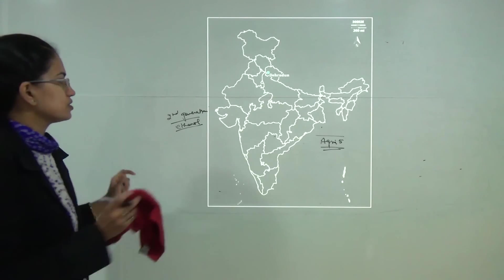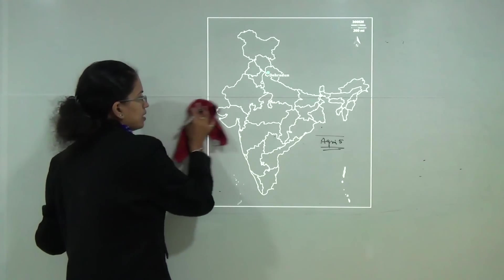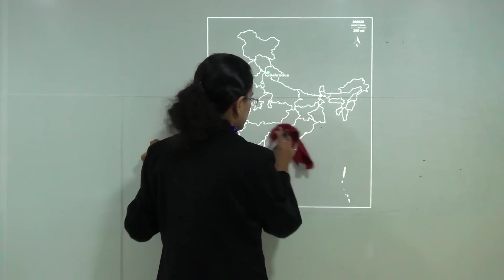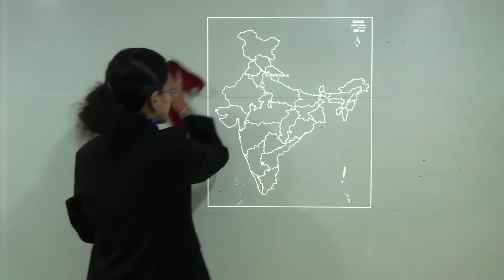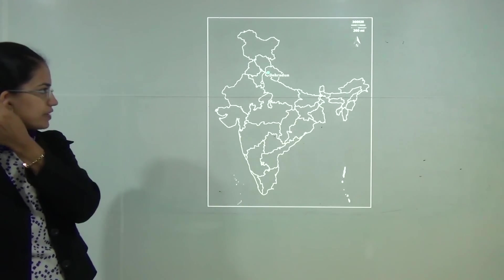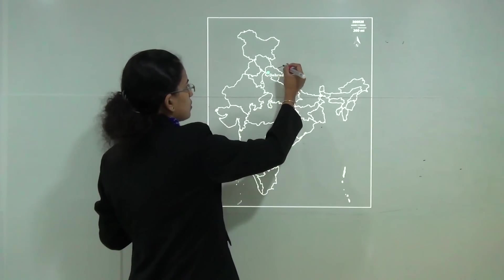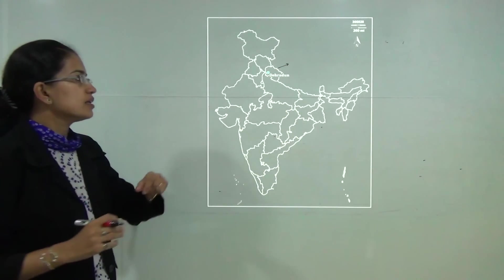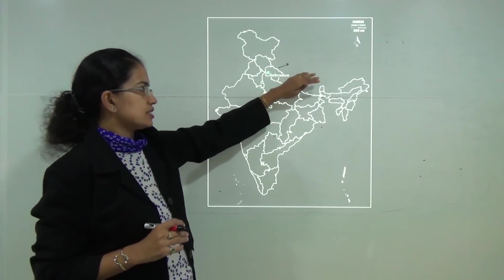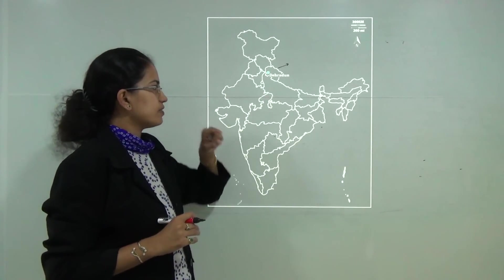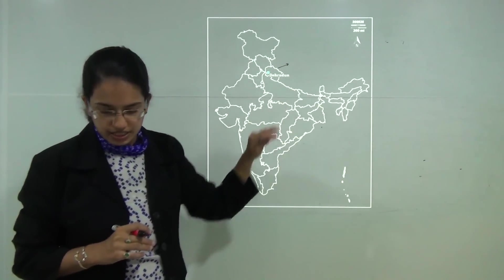The next is Dehradun. Dehradun is the place where the Prime Minister recently inaugurated the Chardham highway development project and Dehradun lies in the state of Uttarakhand. The Chardham highway development project got its inauguration at Dehradun.